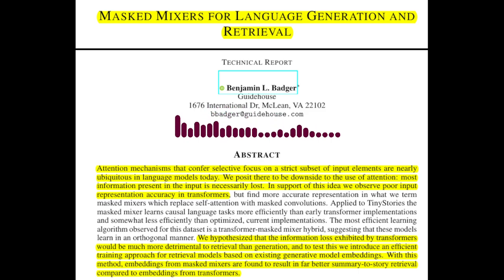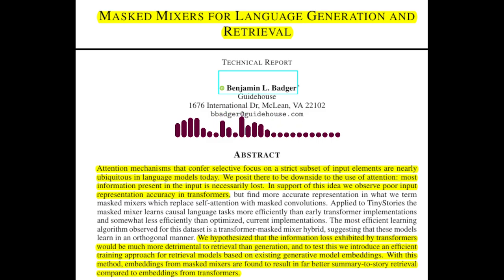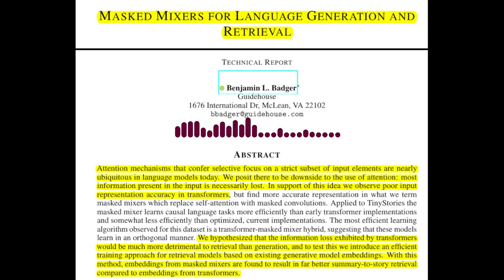While masked mixers don't necessarily outperform transformers in generation, they seem to excel in retrieval. The paper hypothesizes that attention's information-discarding nature makes it less suitable for retrieval tasks. Retrieval requires preserving the relationships between input tokens, which attention can disrupt. Masked mixers, with their better information retention, are better suited for this task.